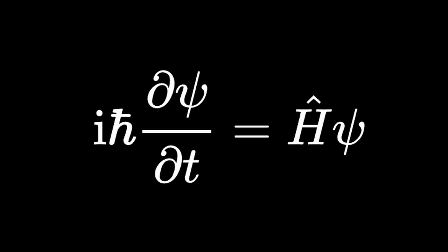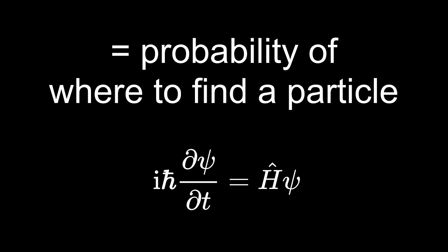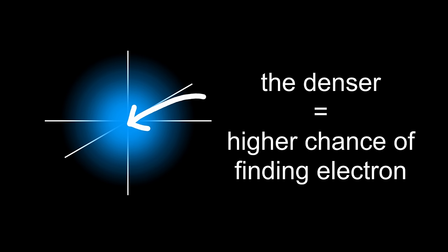Schrodinger gave us an equation that gives you a probabilistic model of where you can find it if you were to measure. You can imagine this as a cloud, and the denser it is, the more likely it is for an electron to be there. But still, where exactly it will end up once you measure it is random.